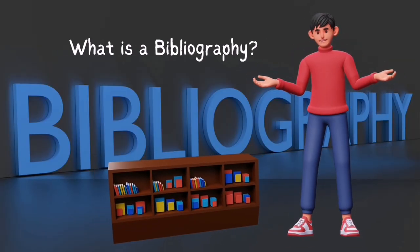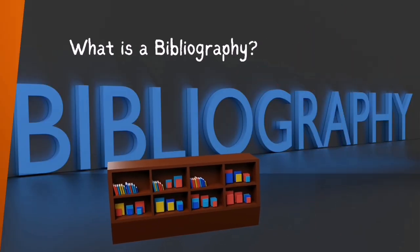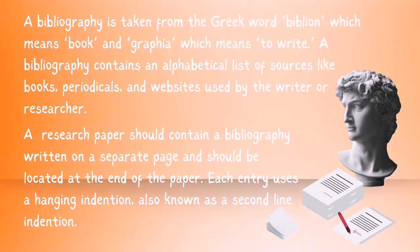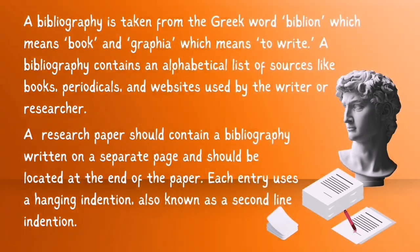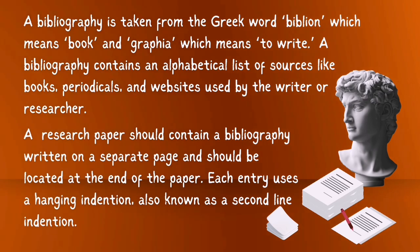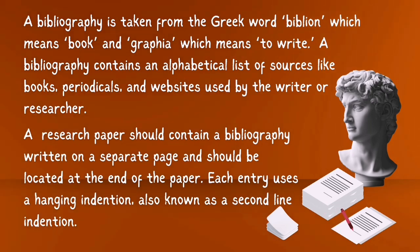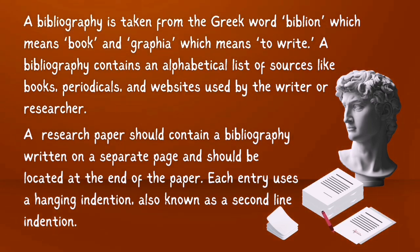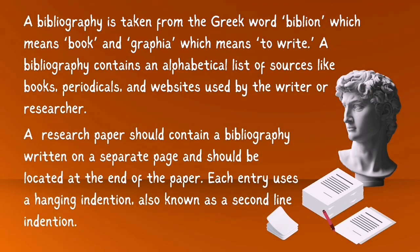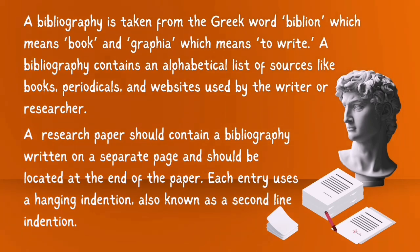So, what is bibliography? A bibliography is taken from the Greek word biblion, which means book, and graphia, which means to write. A bibliography contains an alphabetical list of sources like books, periodicals, and websites used by the writer or researcher. A research paper should contain a bibliography written on a separate page and located at the end of the paper. Each entry uses a hanging indention, also known as a second-line indention.